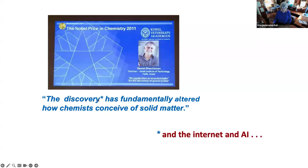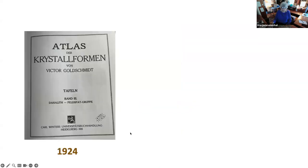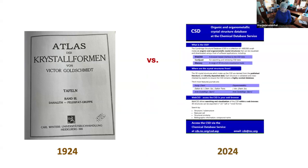Not only has that discovery fundamentally changed how we conceive of solid matter, but also the internet and artificial intelligence — which is sort of where we're at. So what we have now is, on the one hand, the 1924 Atlas of Crystal Forms by Goldschmidt, and on the other hand, today we have the Cambridge Structural Database and many other databases — that's the way to think about the mapping of the world of crystals.